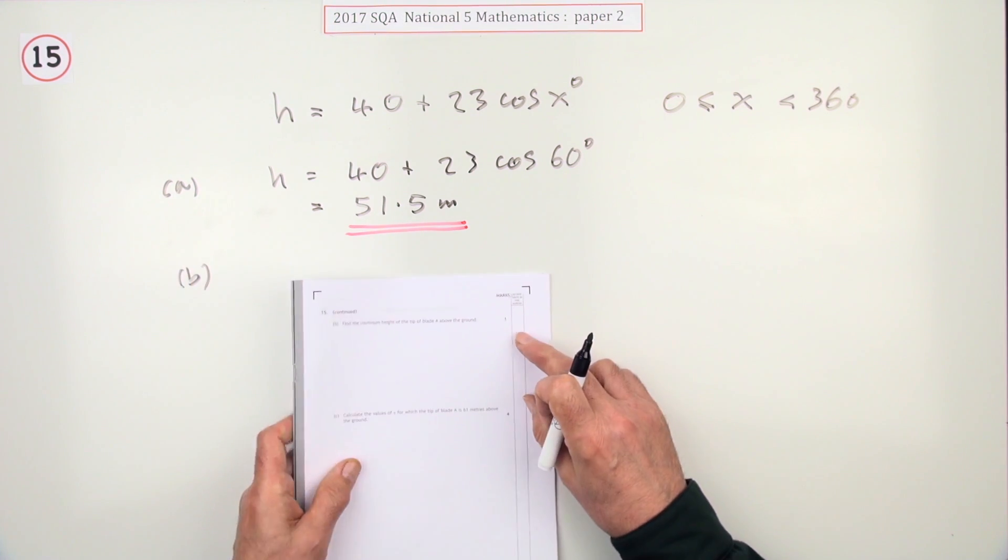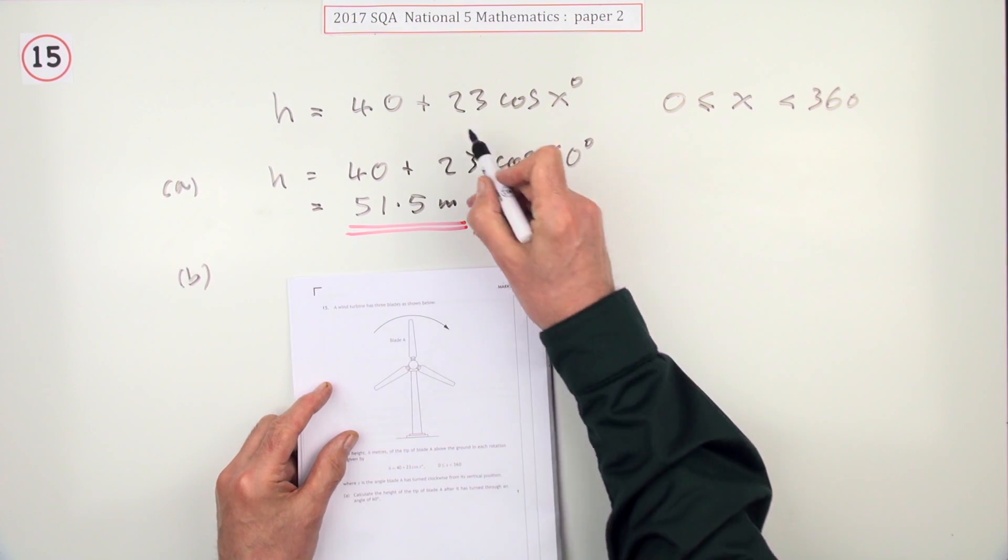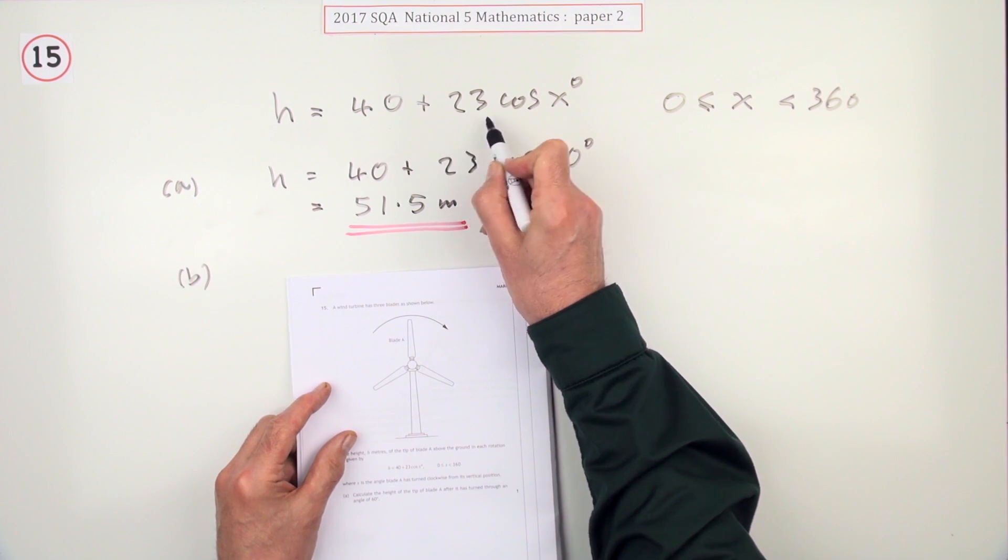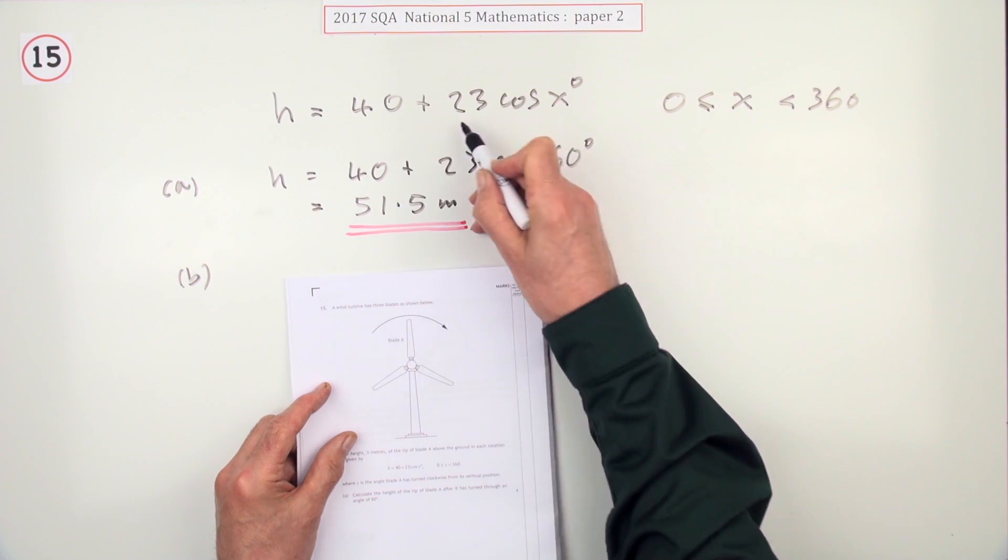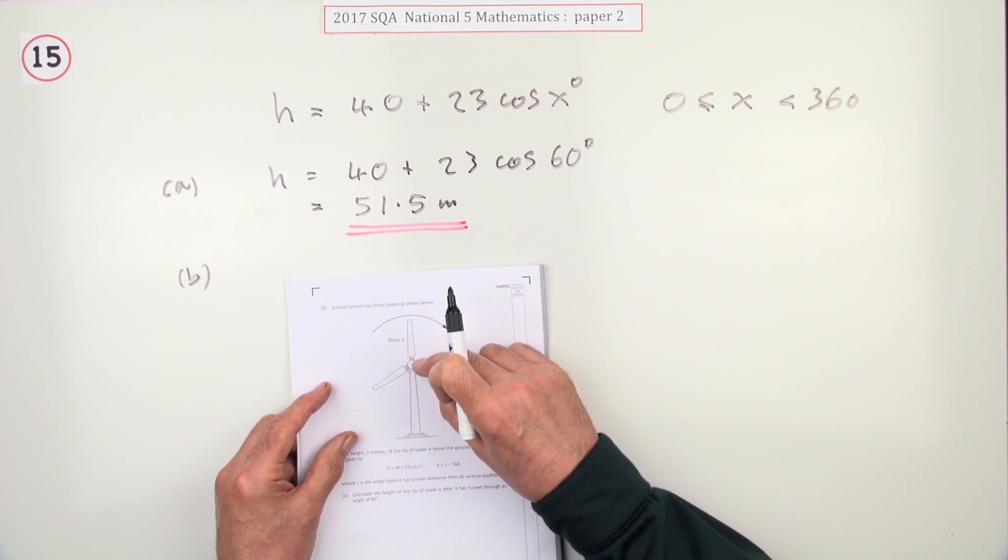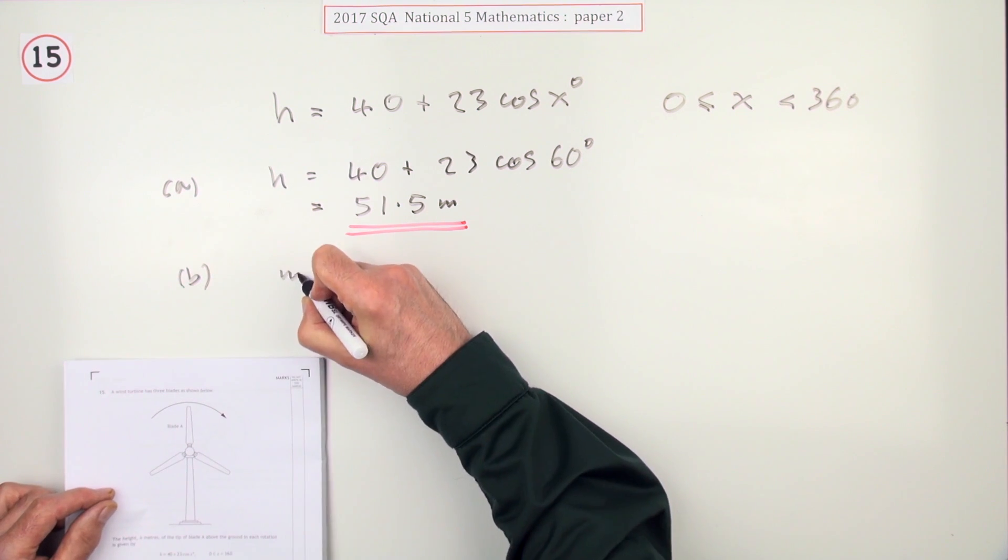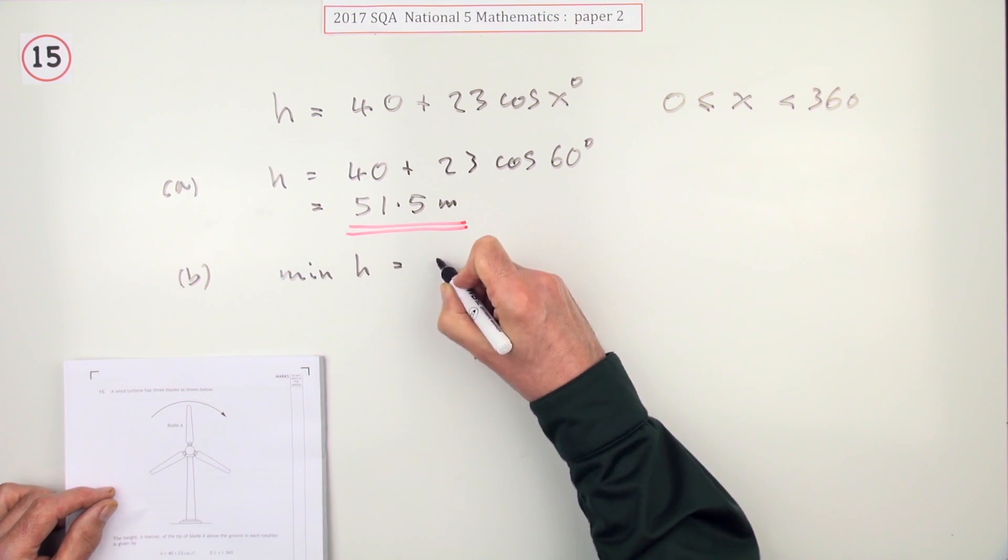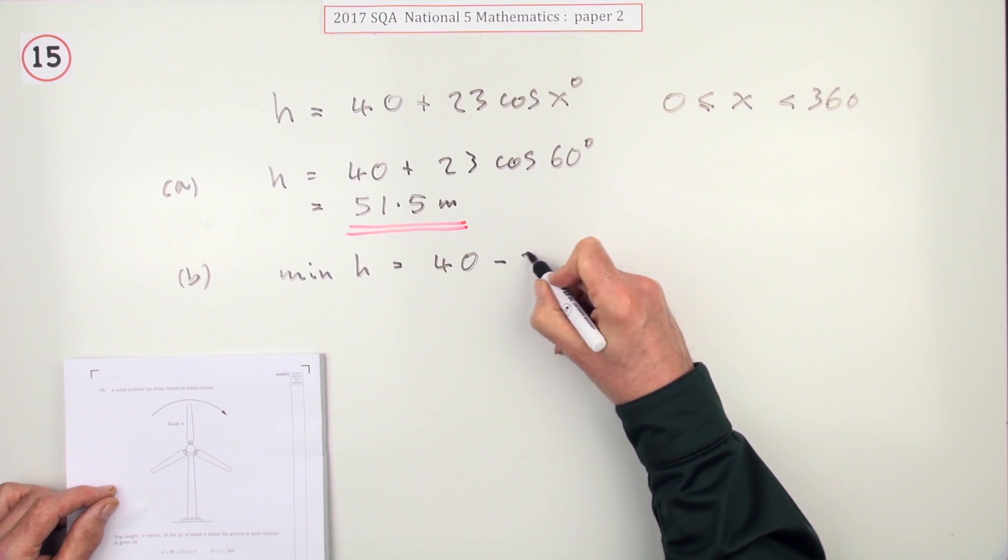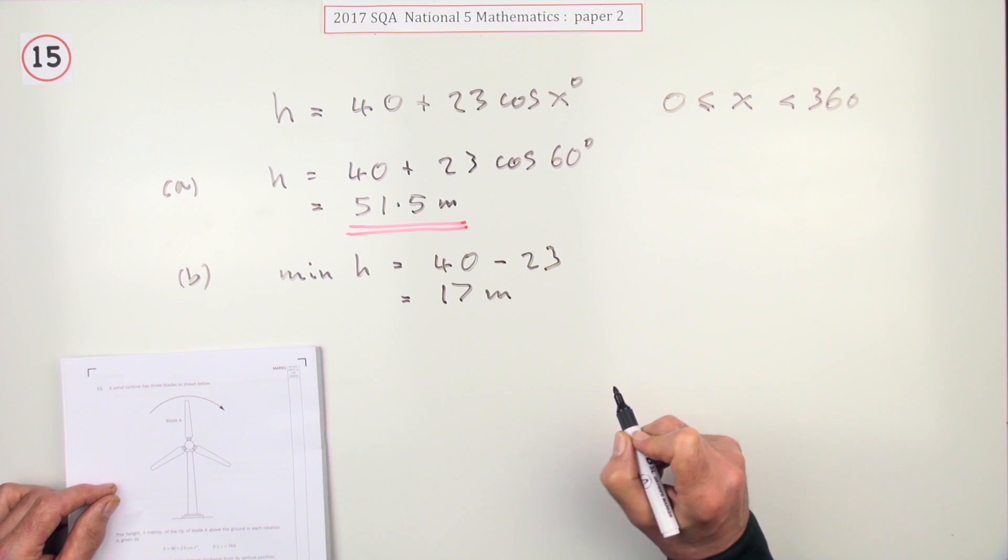Now part b, again just for one mark, says what's the minimum height of the tip of the blade? Well, you can see here that the amplitude, the radius of the blade, must be 23, and that constant 40 must be the distance up to the center of rotation. So the minimum height should be 40 minus 23, and 40 minus 23 is 17 meters.